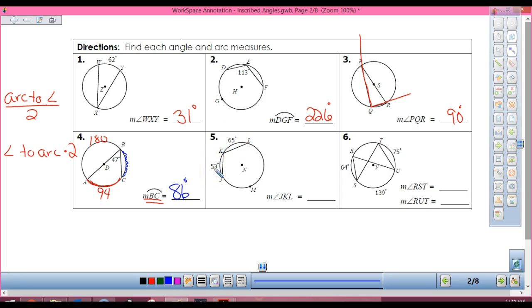Alright, so in 5, if that's 65 and that's 53, what's this big old arc right here? 242. So 360 minus 65 minus 53. So if my arc's 242, what's my angle? 121, divide by 2. And we want arc to angle, arc to angle, divide by 2.